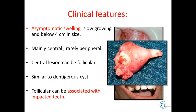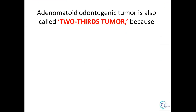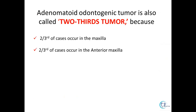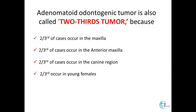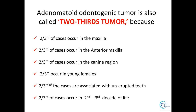These follicular lesions are found to resemble dentigerous cysts and are associated with impacted teeth. AOT is also known as the 'two-thirds tumour' because two-thirds of cases are found in the maxilla, out of which two-thirds are in the anterior maxilla, out of which two-thirds are in the canine region, two-thirds occur in young females, two-thirds are associated with unerupted impacted teeth, and two-thirds occur in the second and third decade of life. Therefore, AOT is also known as the two-thirds tumour.